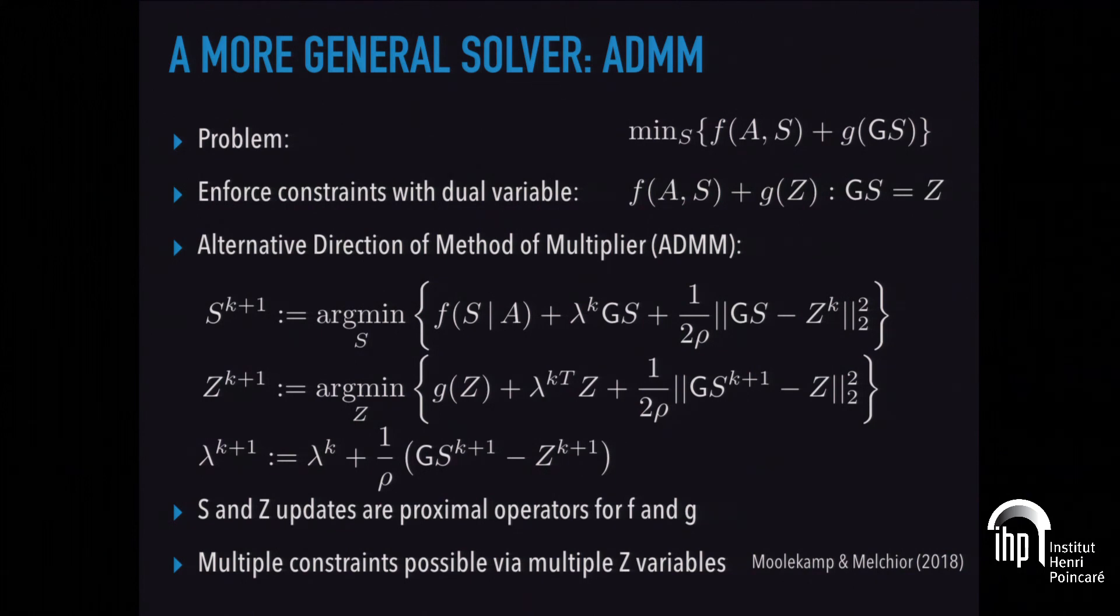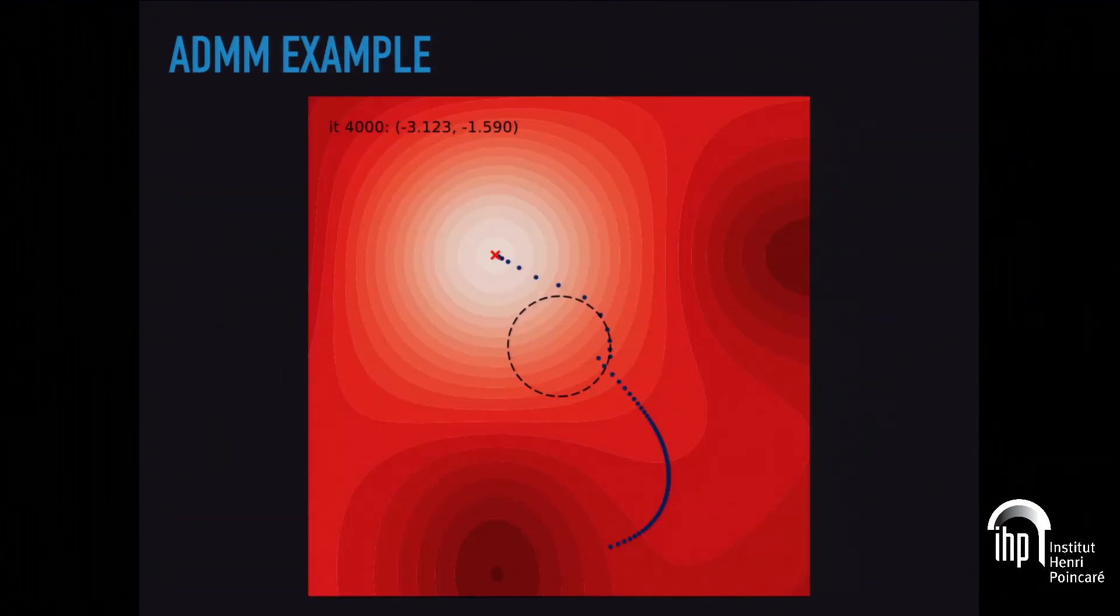What can be shown is that that's a very flexible scheme. Both of these updates here are expressible as proximal operators. They're not directly proximal operators just of S. They're decorated with some additional things, but that's irrelevant. It's still just a proximal operator designed and based on the function F and G. Because there's a lot of wiggle room, a lot of slack in how you solve this in the end, you can have multiple constraints. We wrote a paper about this, how to extend ADMM on multiple constraints.